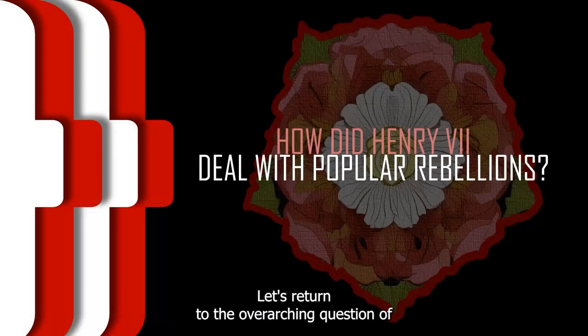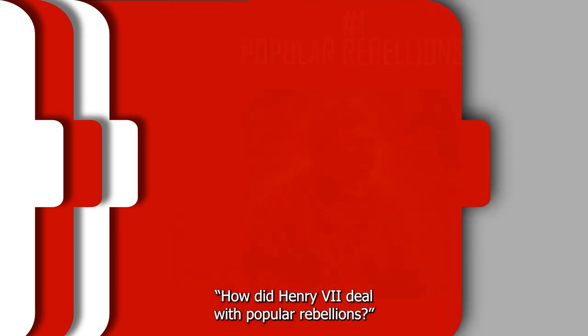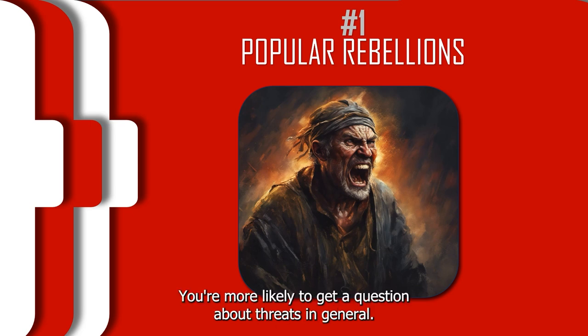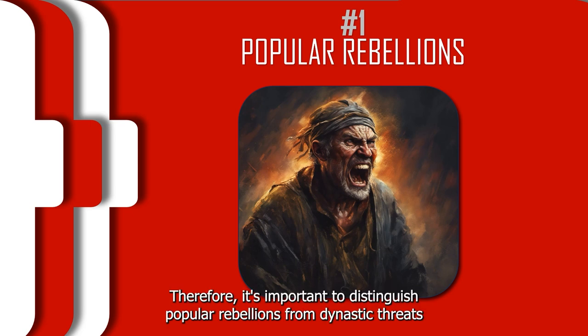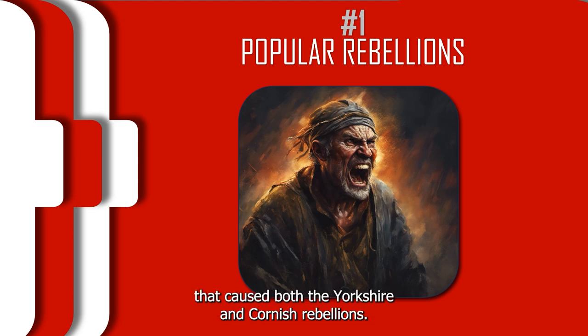Let's return to the overarching question of how did Henry VII deal with popular rebellions? In the exam, you are not likely to get a question solely focused on popular rebellions — you're more likely to get a question about threats in general. Therefore, it's important to distinguish popular rebellions from dynastic threats and then explore the underlying socio-economic problems that caused both the Yorkshire and Cornish rebellions.